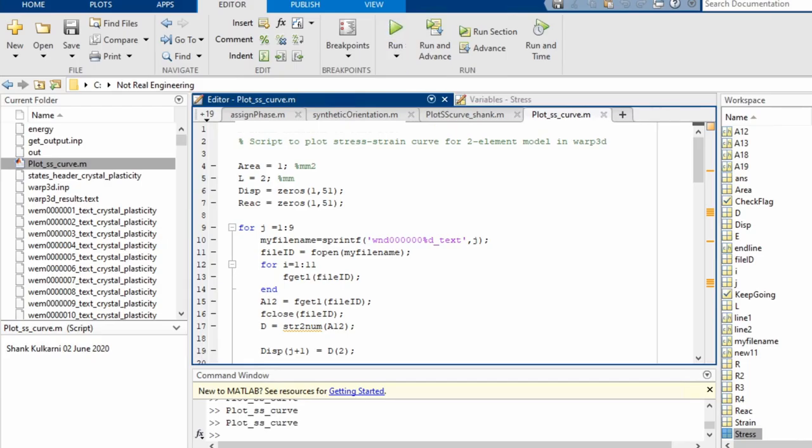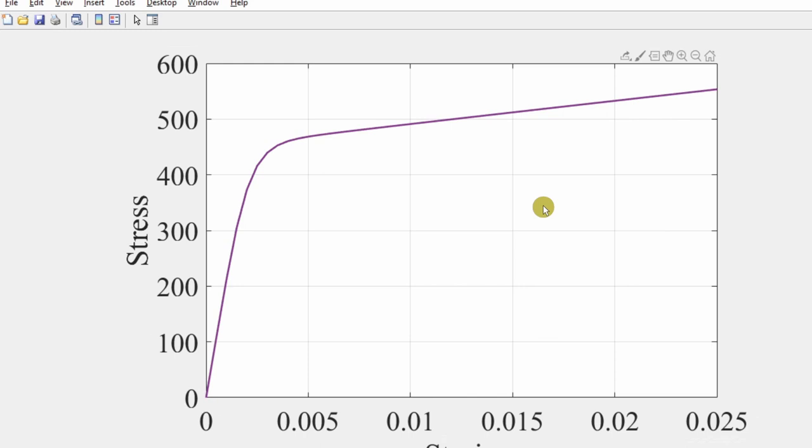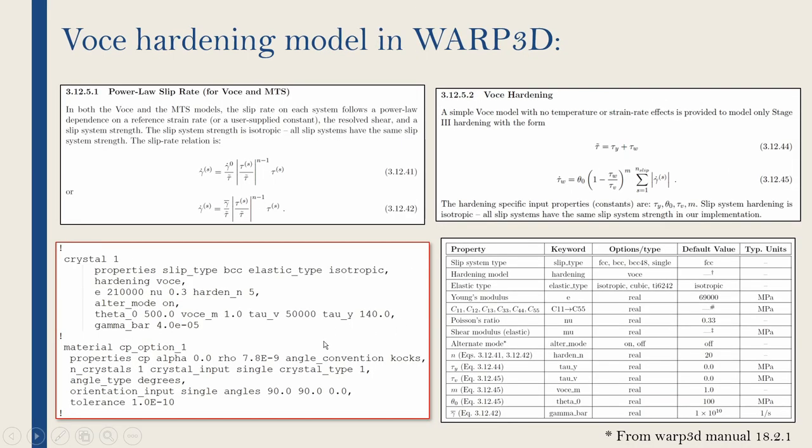I wrote a short MATLAB script which will go through all these files and create a stress-strain graph. So if I run this file, you will see the stress-strain graph is created. Now the aim is to rotate the crystal. What I mean by that is, this Euler angle what we defined over here, we will change this and we will solve the example again and we will get stress-strain graph again. So I did this for bunch of different angles.